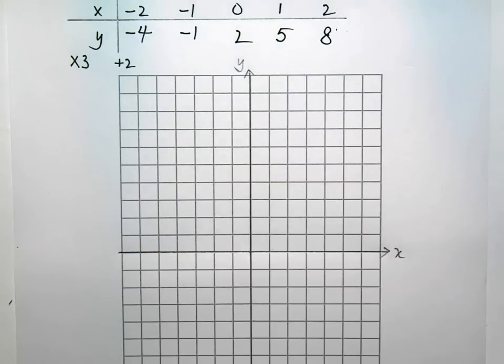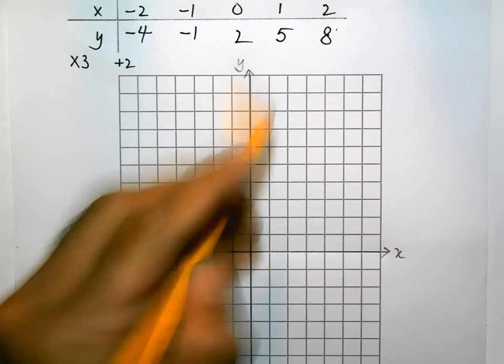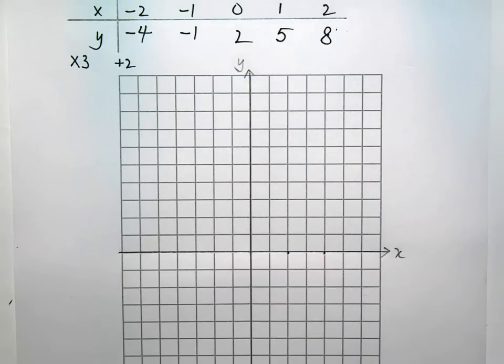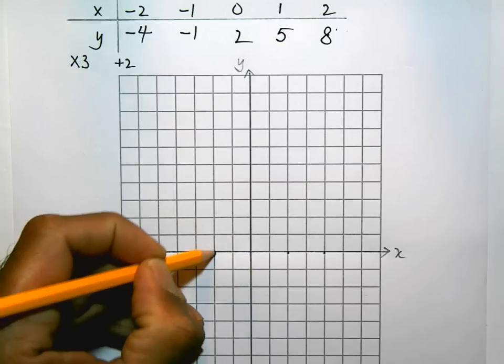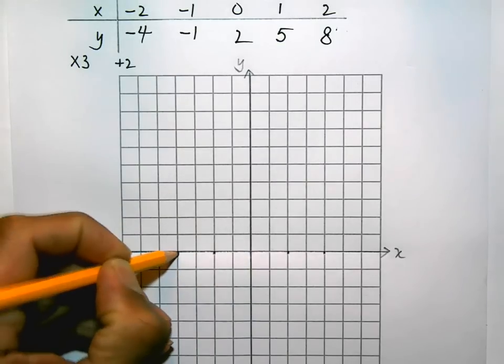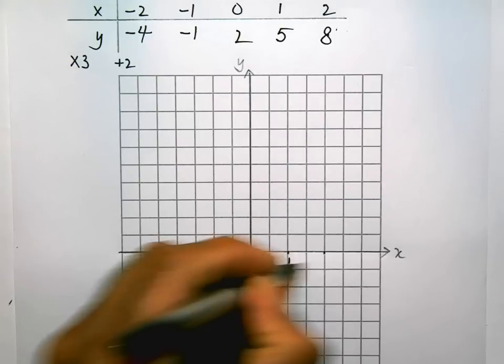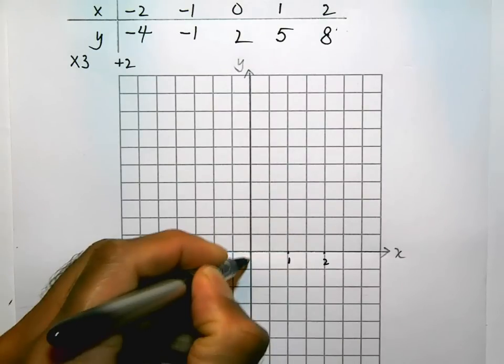Then I'm going to label these points. What I'm going to do is every two squares I'm going to make it 1, 2, that will be 0, that's minus 1 and minus 2. So that's 1, 2, that's 0, minus 1 and minus 2. And those are my x-values.